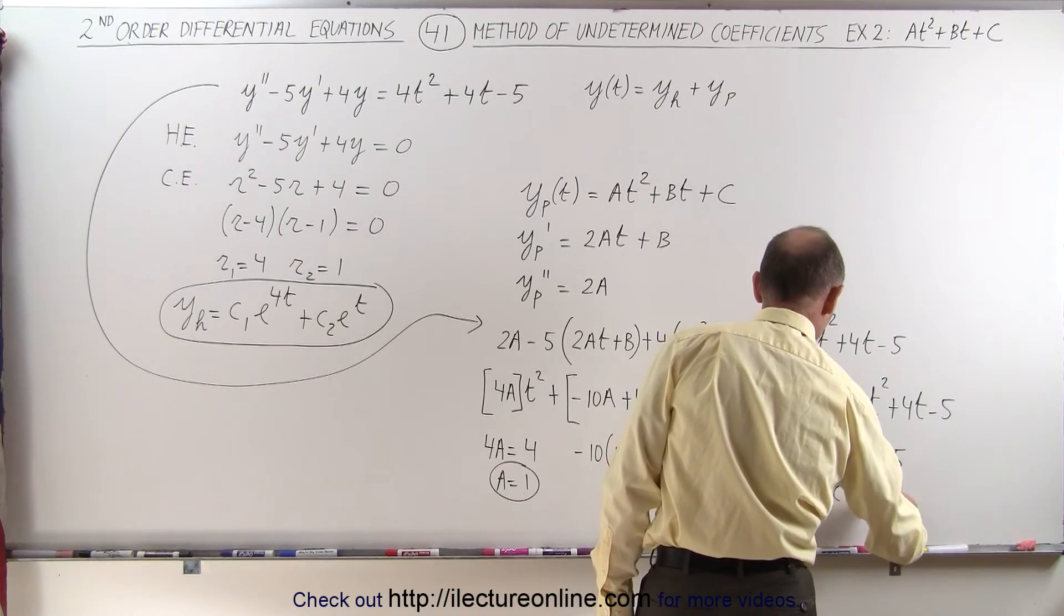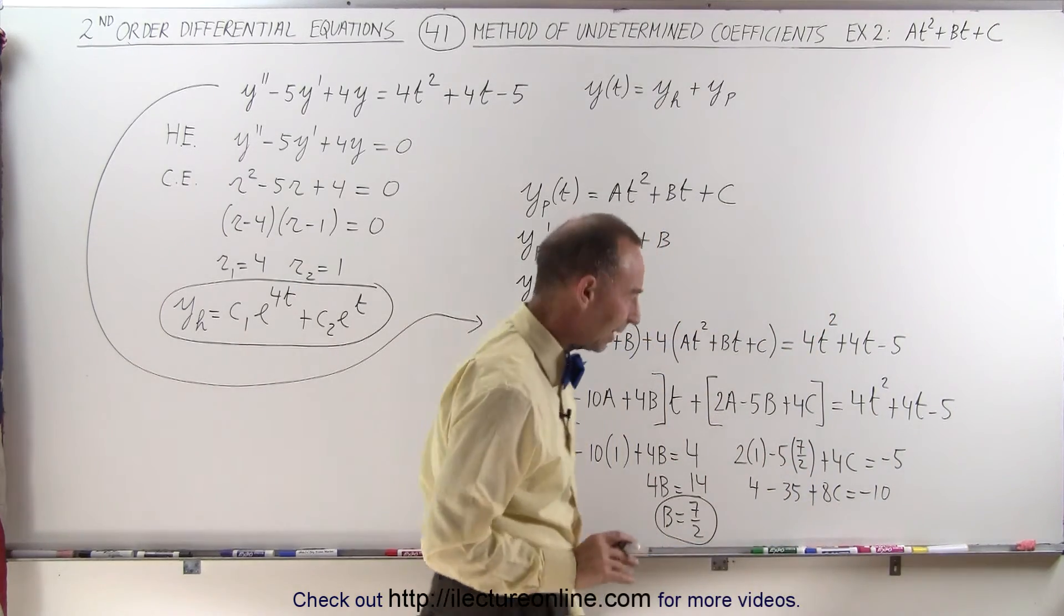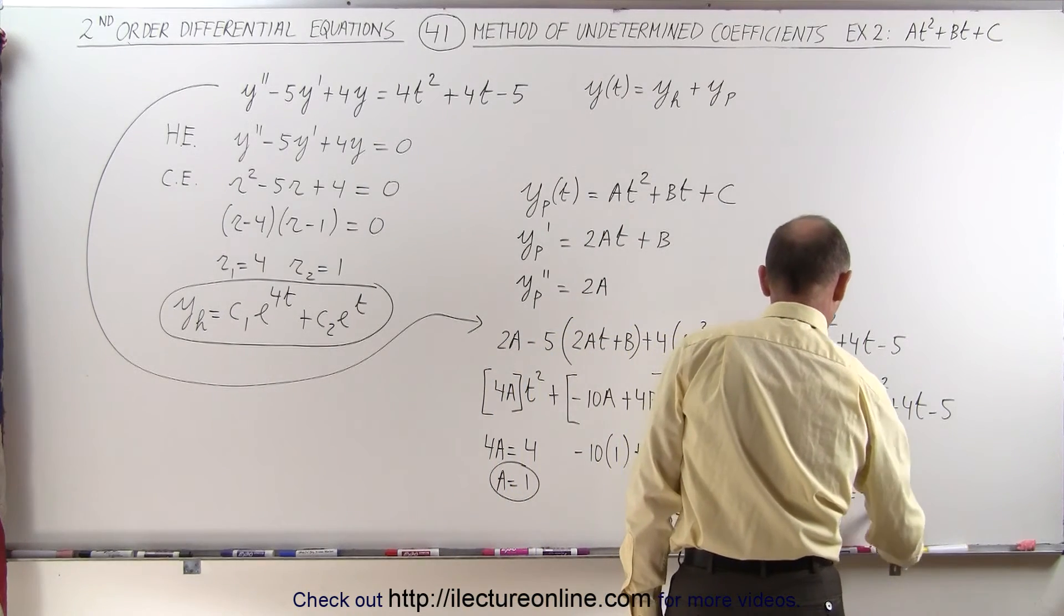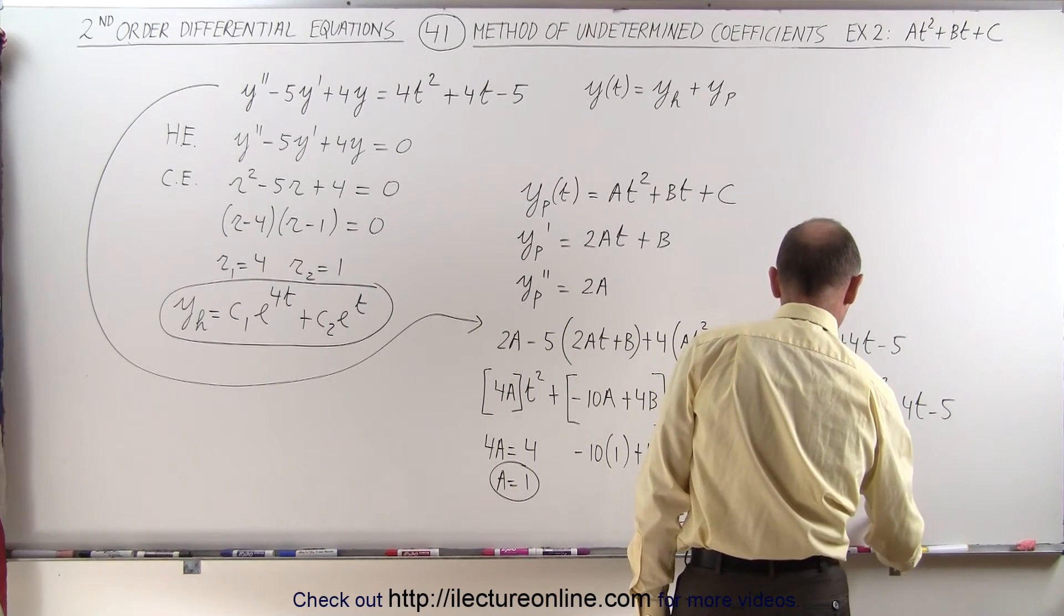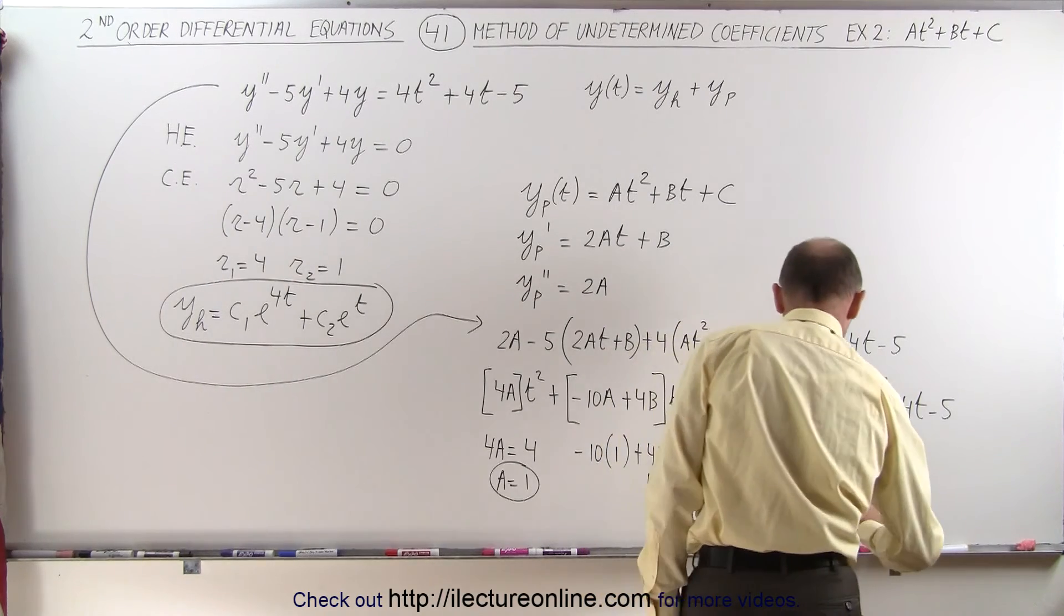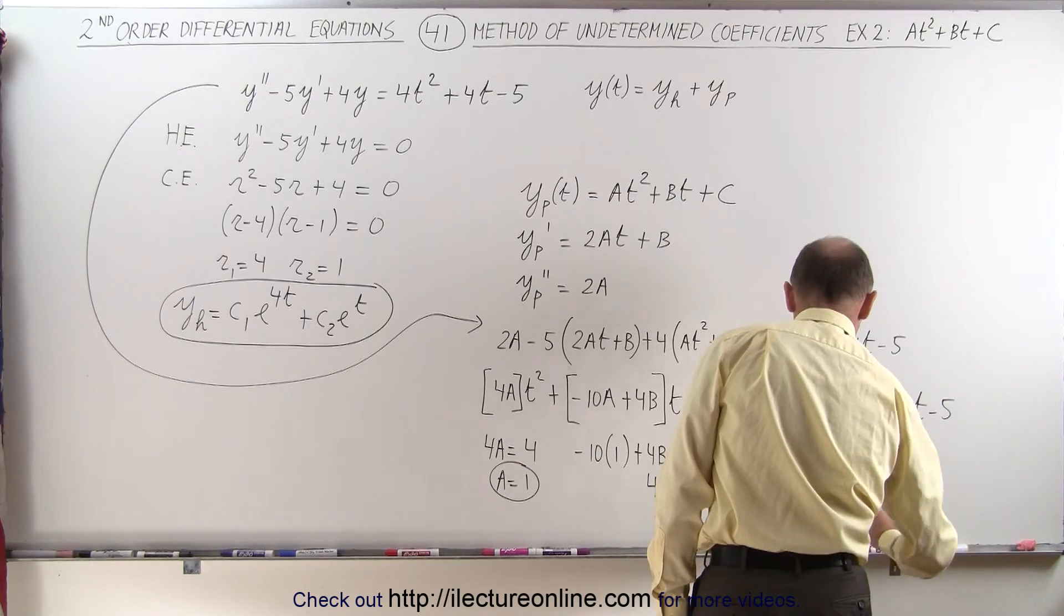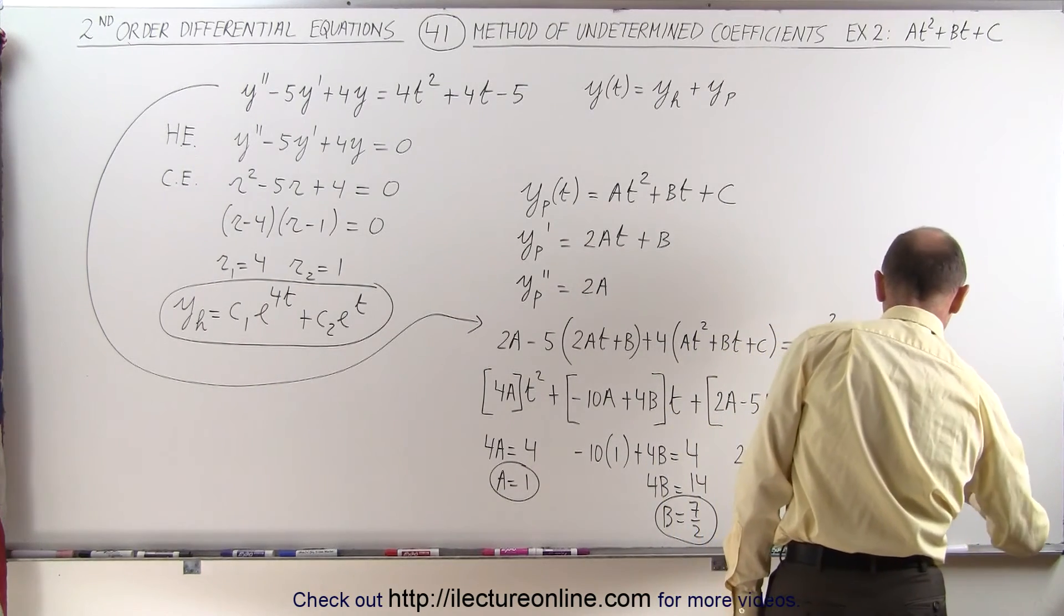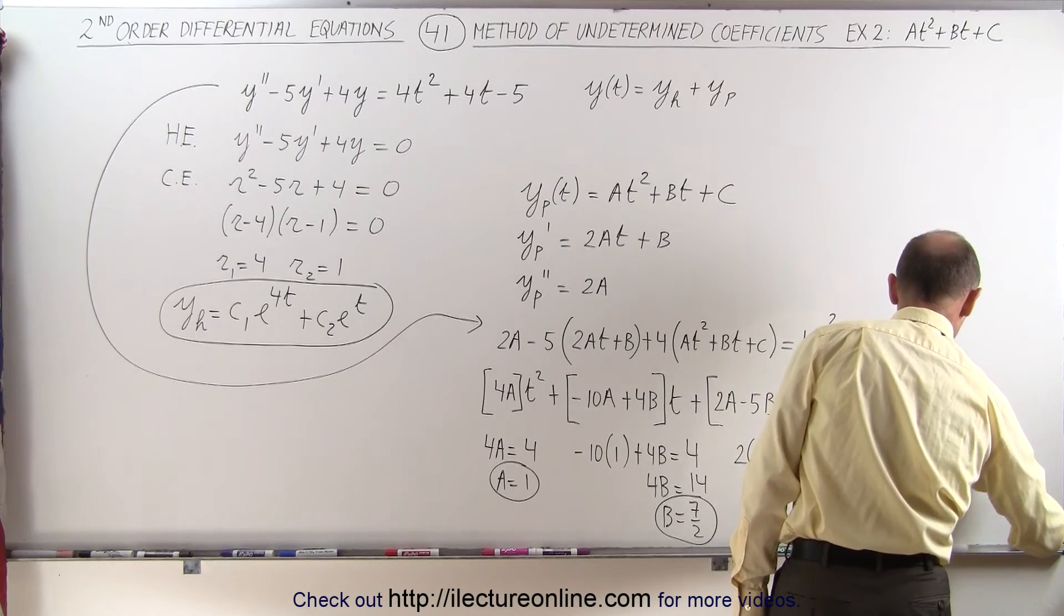So when we do that, we get 4 minus 35 plus 8c is equal to negative 10. That just makes it a lot cleaner to work with. So moving the negative 35 across, that becomes plus 35 minus 10 is plus 25. Moving 4 across, that would be plus 21. So we have 8c is equal to 21, which means that c is equal to 21 divided by 8.